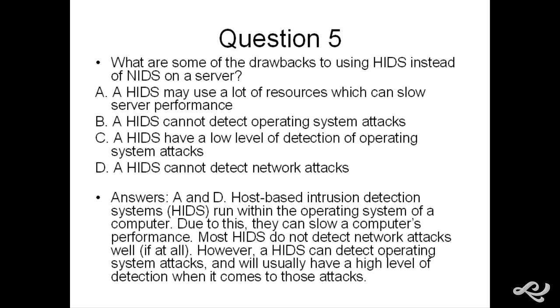A says a HIDS may use a lot of resources, which can slow server performance. It's not definite. Whereas D says a HIDS cannot detect network attacks. And it is definite. So if the question was looking for one answer, and of course they will specify this in the exam, select one. Normally you'll select one. But if you have to select two, they'll tell you to select two. So D is definite. And that would be the best answer if it was looking for one particular answer. Whereas A, a little bit vague. It may, it can, it's not definite.